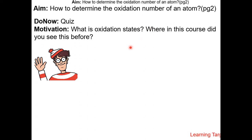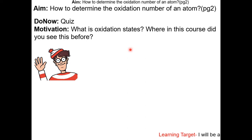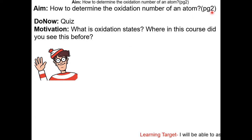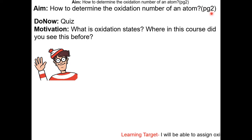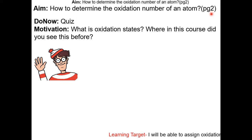This is my first video lesson for Unit 15, Redox Chemistry. In this lesson, we're going to determine the oxidation number of an atom. Go to page 2 in the class packet. You can download the redox class packet from our website.